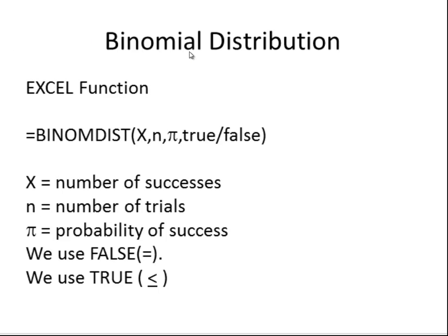This is the Excel command you would use to figure out answers for binomial distribution problems: BINOMDIST. X is the number of successes, n is the number of trials, and then you have your probability of success. The last argument you would put either true or false depending on the problem — false if you have an equal sign, and true when you have a less than or equal to inequality sign.